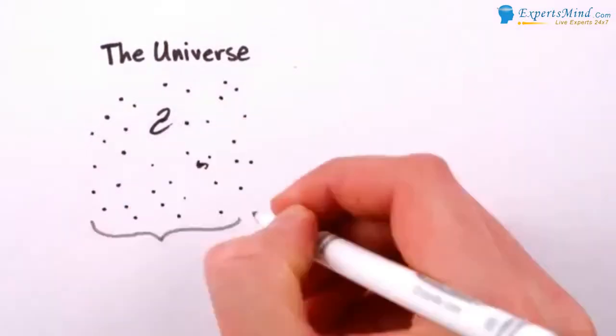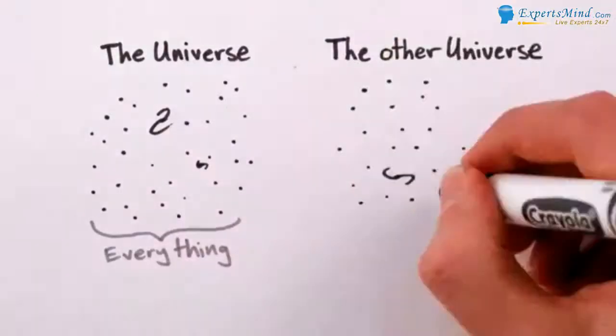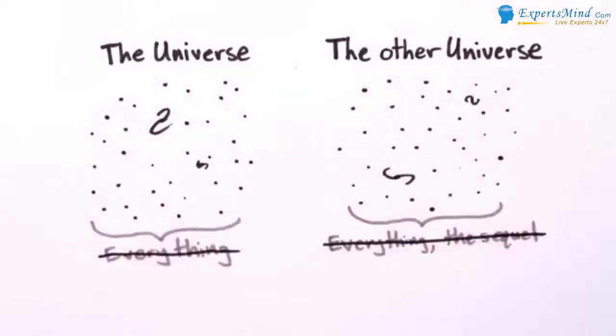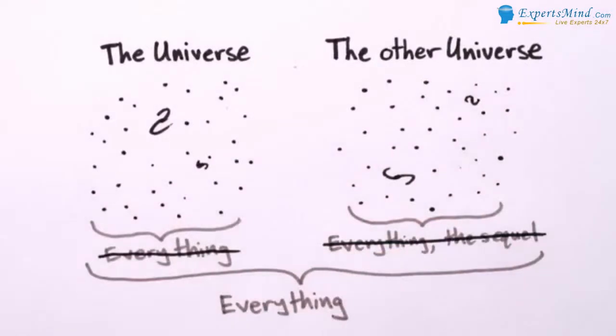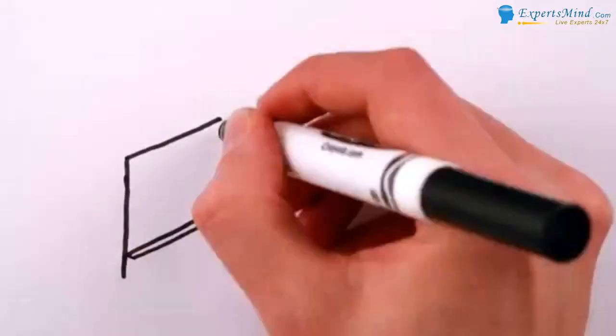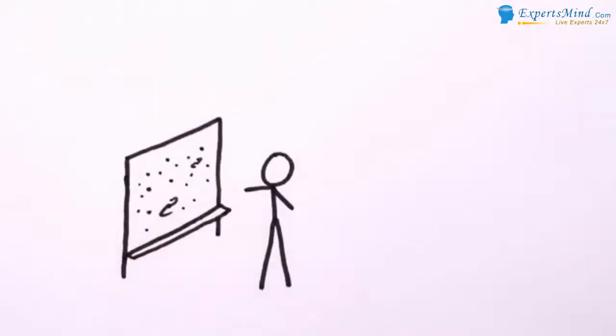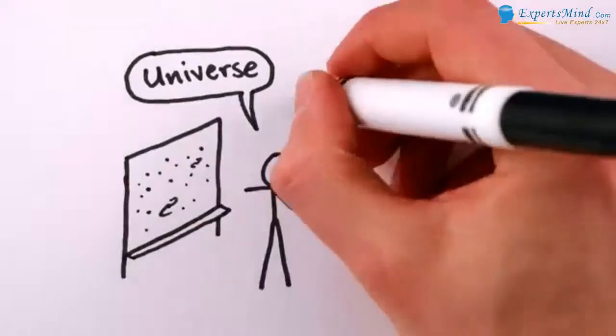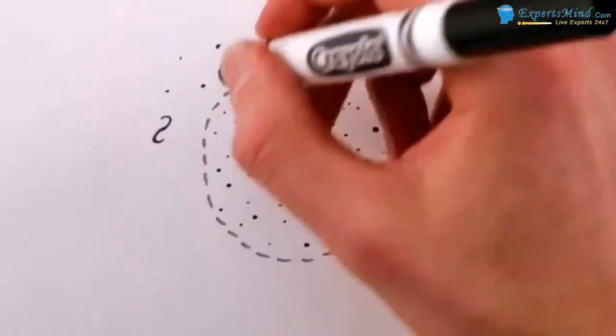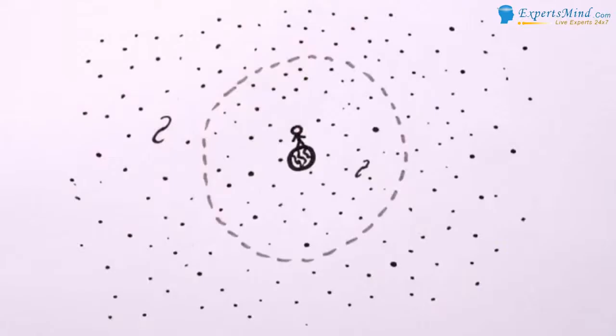I mean, if the universe is everything that there is, you can't have two versions of it, right? Otherwise, the pair would really be everything, and what you started off calling the universe wasn't. The problem here is terminology. Physicists speaking informally often say universe when they really mean observable universe. That is, the part of the whole universe that we've so far been able to see. And it's perfectly fine to talk about multiple different observable universes.